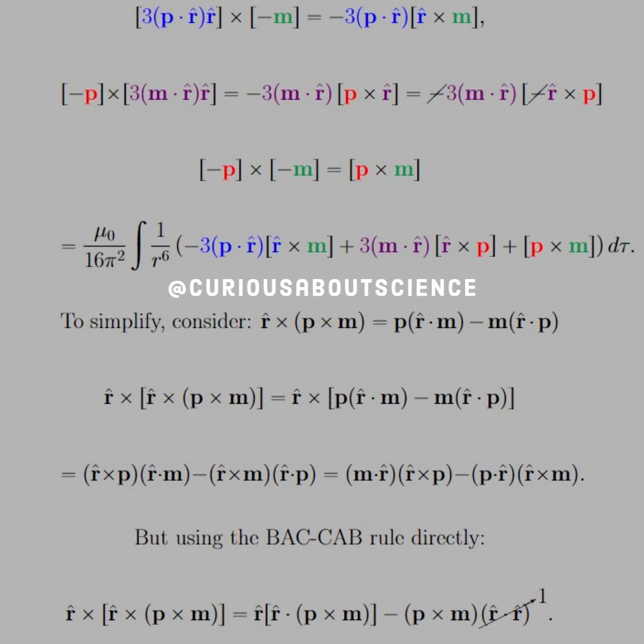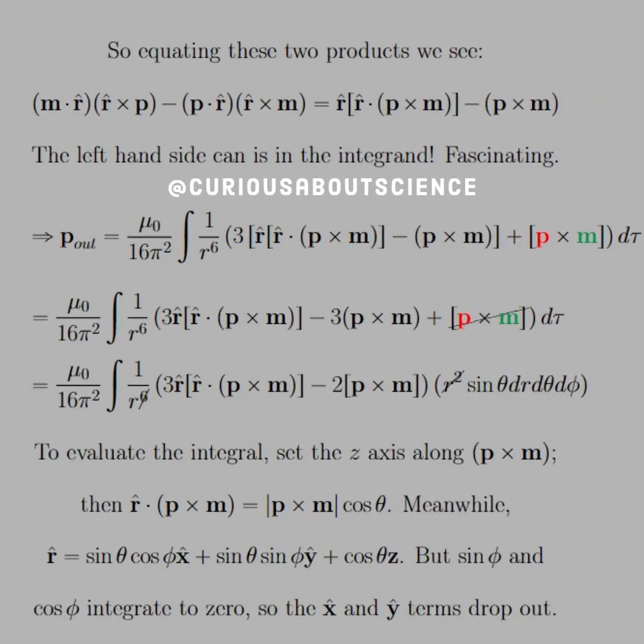We can now use the BAC-CAB on the left-hand side of that double or triple cross product now, R cross the bracket, and find another representation of this, not using this vector identity specifically. And then, we can equate the two and substitute it into the integral. So, on the left-hand side of that, we have R cross R cross P cross M. That triple product is gross. And we use the BAC-CAB rule. And again, we see that once we expand that, we get R hat and then bracket R hat times P cross M minus P cross M, R hat dot R hat, which goes to 1.